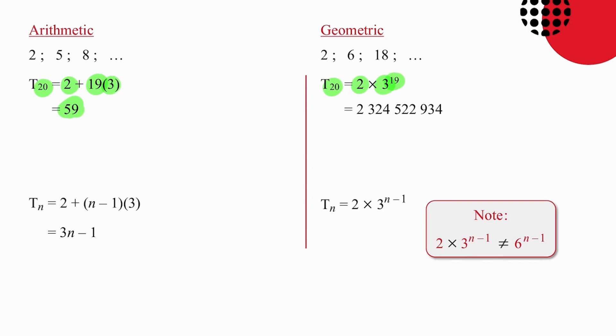Taking this to the general formula for each of these sequences, the nth term for an arithmetic sequence is the first term, plus n minus 1 times the common difference, and simplified in this situation gives us 3n minus 1.